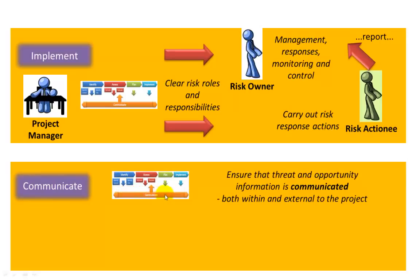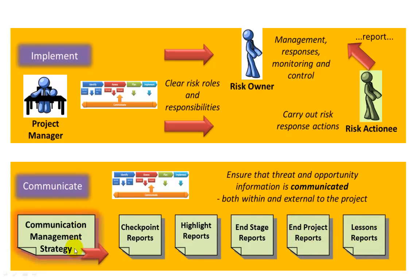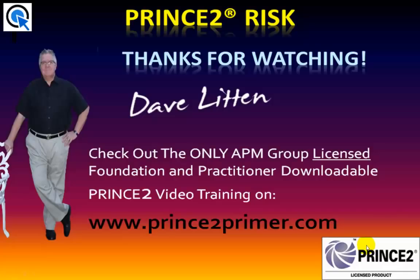The final step is communicate, which runs in parallel and is carried out continually to ensure that threat and opportunity information is communicated both within the project and externally. The main document created in the initiation stage is the communication management strategy, which dictates how communications — including risks — are to take place. Checkpoint reports will contain risk status, as will highlight reports. At the end of a stage, the end stage report describes the risk situation, as will the end project report and any follow-on actions. The lessons report will contain any risk management learnings to be passed on for future projects.